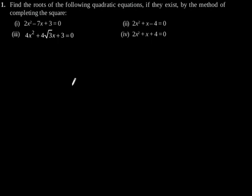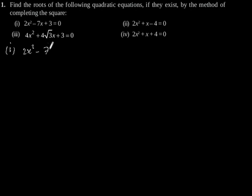Exercise 4.3, question number 1. Find the roots of the following quadratic equation, if they exist, by the method of completing the square. First: 2x squared minus 7x plus 3 is equal to 0.